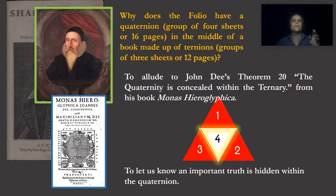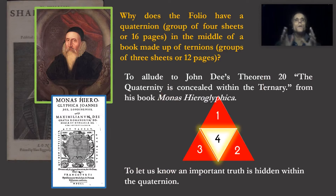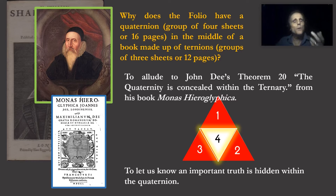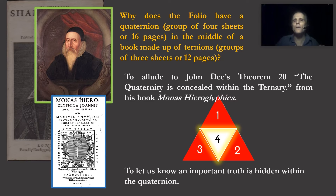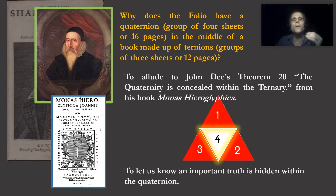We can therefore answer the question this quaternium poses: why does the folio have a quaternium — a group of four sheets or sixteen pages — in the middle of a book made of terniums, groups of three sheets or twelve pages? To allude to John Dee's Theorem 20, 'the quaternity is concealed within the ternary,' from his book Monas Hieroglyphica, and to let us know an important truth is hidden within the quaternium.